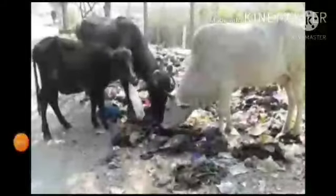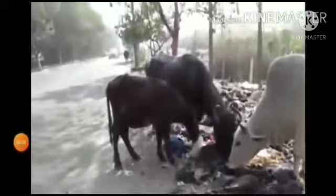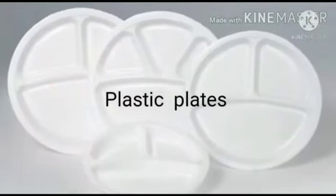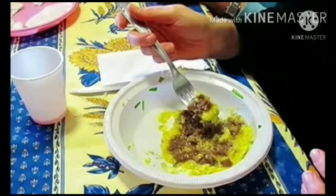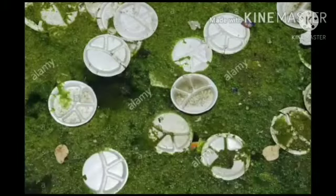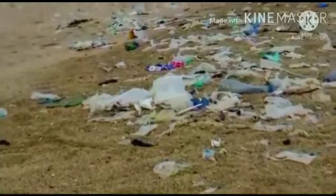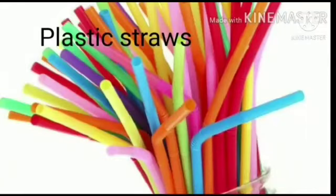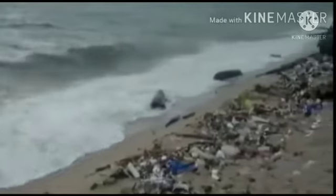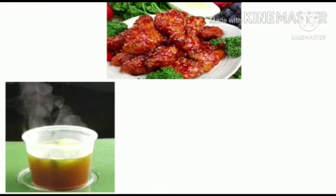Animals eat plastic bags by accident when they contain leftover food. Plastic plates are used for a short period of time but will stay in the environment for over a thousand years. Water pouches often get littered and are difficult to recycle. Plastic straws are difficult to recycle and end up polluting the ocean. Chemicals from plastic sheets leak into food, especially when the food is hot, spicy or oily.